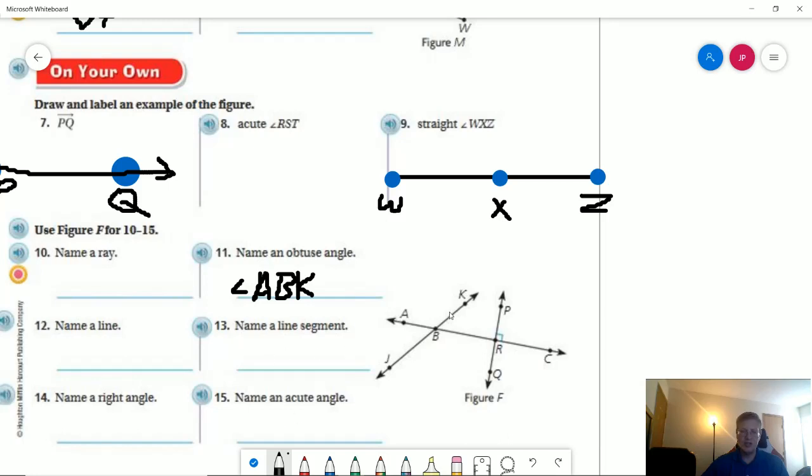Acute angles. So that would be smaller. So I could do A, B, J. I could do K, B, R, because that would be smaller.